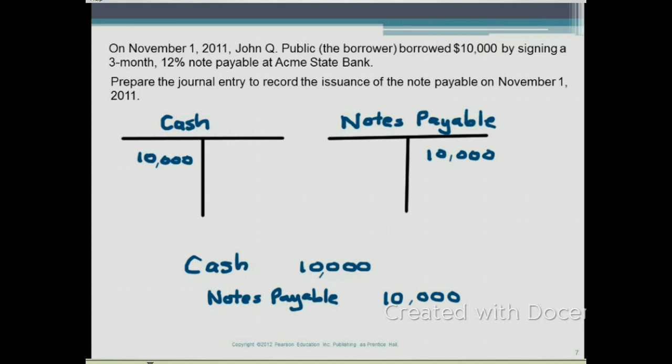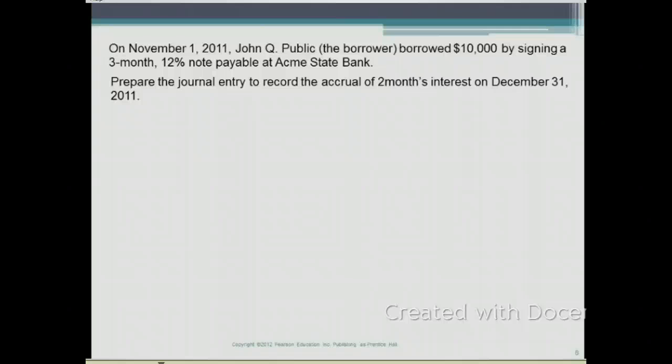T-accounts represent ledger accounts; in our accounting cycle we first do the journal entries and then post them to the T-accounts. Now let's look at the second part of this question. We need to prepare the journal entry to record the accrual of two months' interest on December 31, 2011.